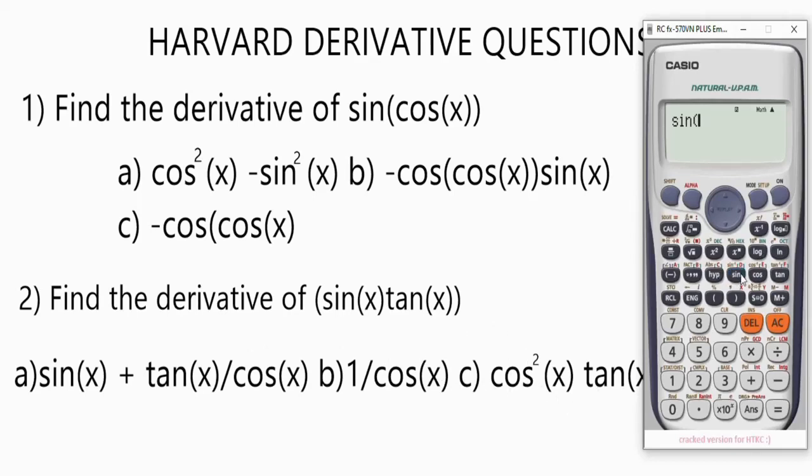We have sin x, alpha x, close the brackets. We have plus tan x. Let's put it in fraction. So we have sin x plus, make use of this fraction button. Very, very important. When dealing with fractions, always make use of this fraction button. We have tan x, alpha x, close the brackets, over cos x, alpha x. So that's it. Press equal to 6.15. So that's what we got when we differentiated the question.